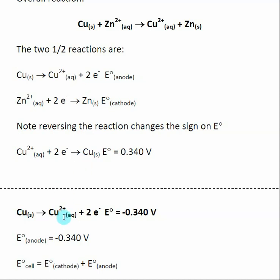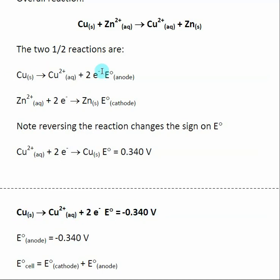The actual half reaction in our overall redox reaction is an oxidation, but we were given it as a reduction, so we need to reverse the reaction. When we reverse the reaction, all we have to do to the E naught is change the sign. As a reduction it was +0.34 V, and as an oxidation it becomes -0.34 V. This is the form we want because this is the half reaction going on in our electrochemical cell — so this is E naught anode.